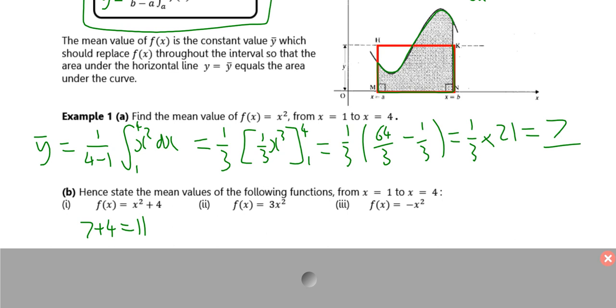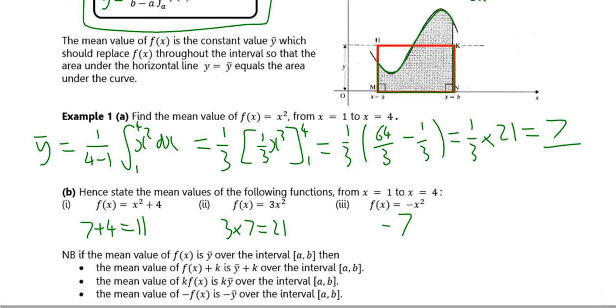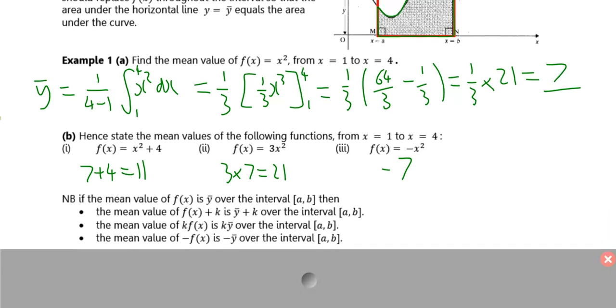In example 2, if I have f of x is 3x squared, if you multiply all the x values by 3, then the mean value will be multiplied by 3, which is 3 by 7, which is 21. In example 3, if you make all the y values negative, then their average will turn negative, so the mean value is minus 7.